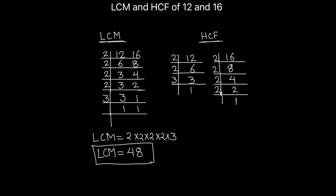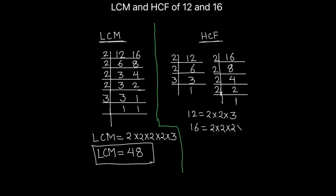The factors of 12 are 2 times 2 times 3, and the factors of 16 are 2 times 2 times 2 times 2. To find the HCF we identify the common factors between the two numbers. Circling the common factors: one 2 is common, and another 2 is common. The HCF is the product of these common factors: 2 times 2 equals 4.